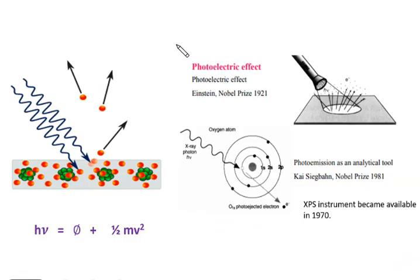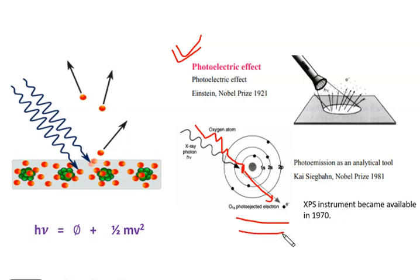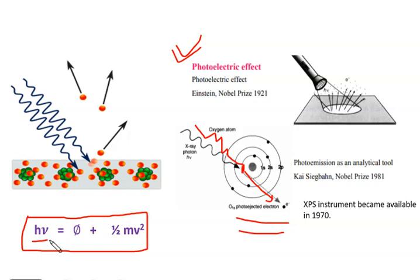Photoelectron spectroscopy is based upon the photoelectric effect, so it is essential to discuss the photoelectric effect first. When we irradiate some material with electromagnetic radiation, electrons from the core are ejected. These ejected electrons are called photoelectrons and the phenomenon of ejection of these electrons is known as the photoelectric effect. The photoelectric effect is represented by the equation: hν is the energy of the falling radiation, φ is the work function — the minimum amount of energy needed to eject an electron from the surface — and ½mv² is the kinetic energy of the ejected photoelectron.